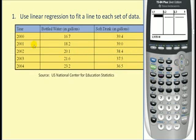We're first going to type in our year. For the year 2000, we use the X value of zero. 2001 will be one and so on. We'll type in water for L2 and soft drink for L3.